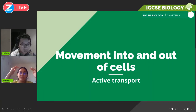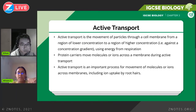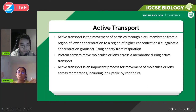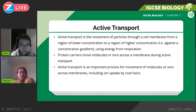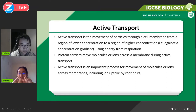Active transport is different. It is the movement of particles through a cell membrane from a region of lower concentration to a region of higher concentration — against the concentration gradient — using energy from respiration. There are two key differences from diffusion and osmosis: the movement is from lower to higher concentration, and the energy comes from respiration, not from the random movement of particles.